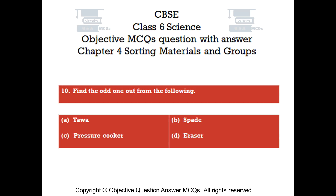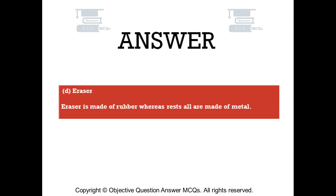Question number 10. Find the odd one out from the following. Option A: Towa. Option B: Spade. Option C: Pressure cooker. Option D: Eraser. The right answer is Option D — Eraser. Eraser is made of rubber, whereas the rest are all made of metal.